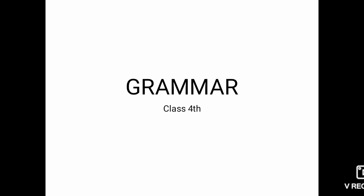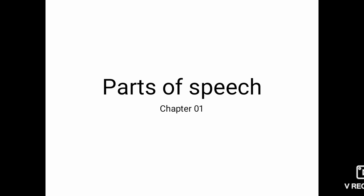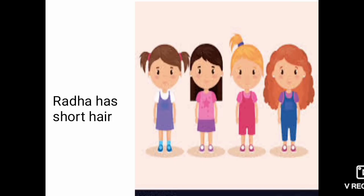Hello everyone. Let's start with subject grammar, first chapter: parts of speech. This is the second part of parts of speech. Here you can see four girls and a sentence about them — Radha has short hair. Everyone has hair, but here they are pointing towards Radha, that she has short hair. So 'short' is the word which tells us about Radha's hair.